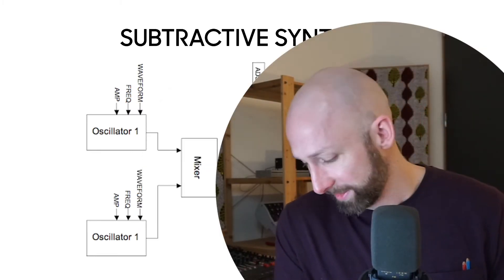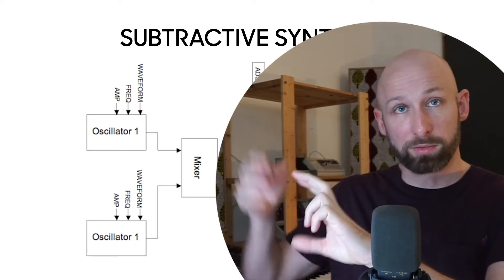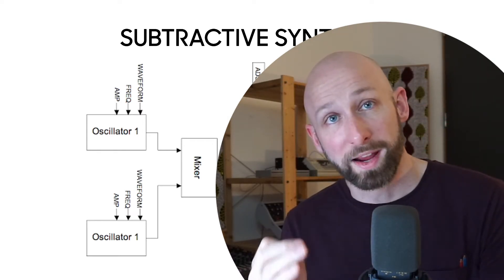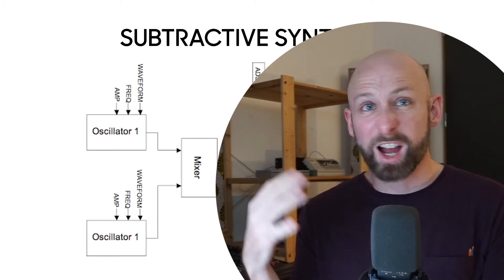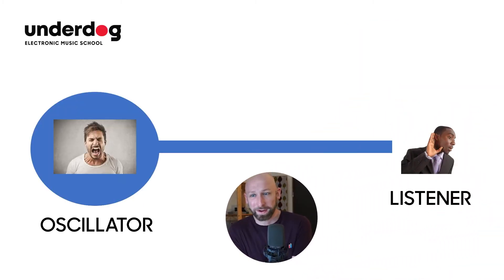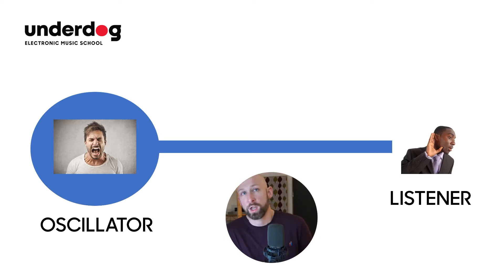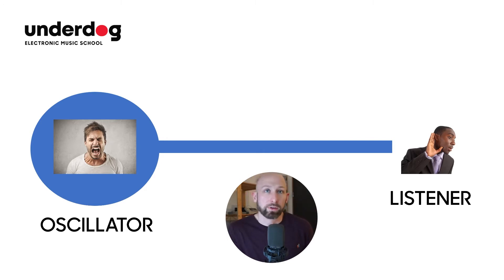I want you to imagine a little dude in a box — a little person in a closed box — and this person is screaming all the time, just screaming non-stop. This little person is always screaming and the sound is coming out of the box through a tube into your ear. That's the listener — that's you. And that little dude we're just going to call the oscillator. He's just a thing that's always making sound, and that sound is coming out through a tube into your ear.